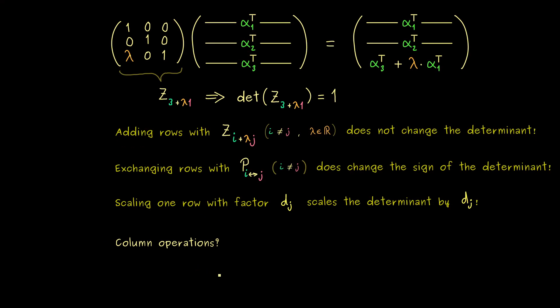can we also do column operations when we want to calculate a determinant. Usually in the Gaussian elimination we will not do column operations, because we don't want to change the kernel of the given matrix. This is because we want to solve a system of linear equations, so the kernel gives us the solution in the end.